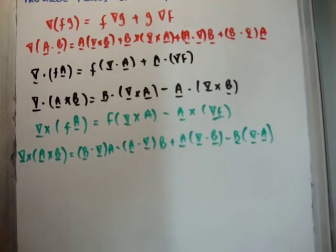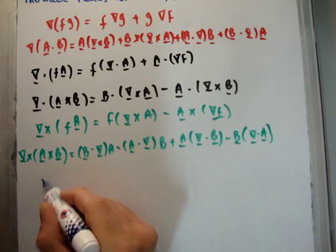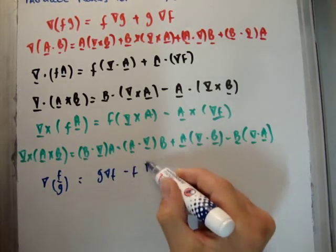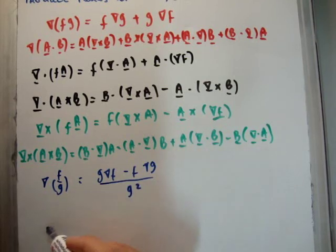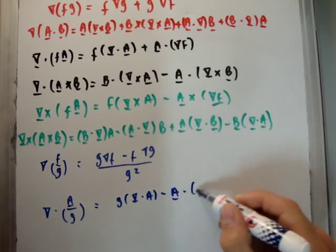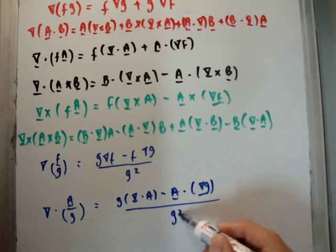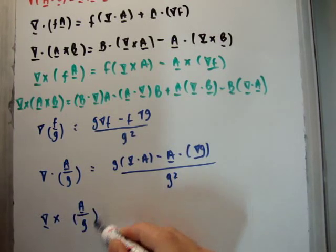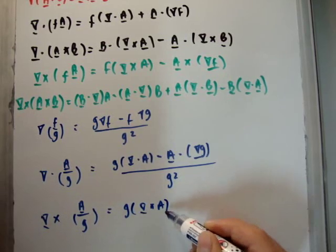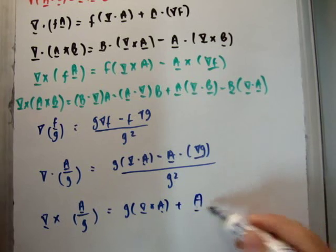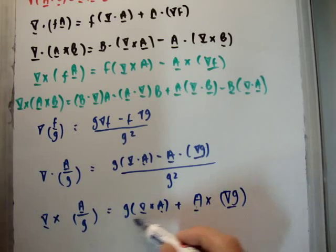There are also three quotient rules. If you take the gradient of the quotient of two scalar functions, you get what you would expect. If you take the divergence of a vector divided by a scalar g, you get g outside of the divergence of a, minus a dot the gradient of g, all divided by g squared. And if you take the curl of vector function a divided by a scalar g, you get g outside of the curl of a, plus a crossed with the gradient of g, all divided by g squared.